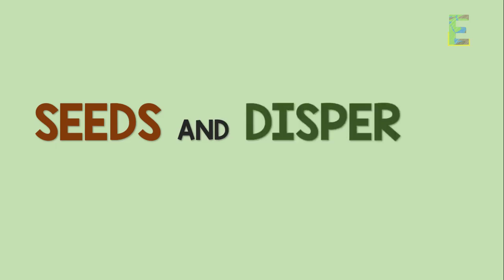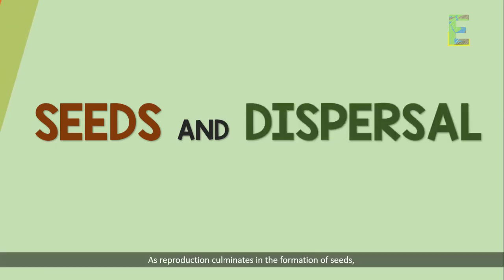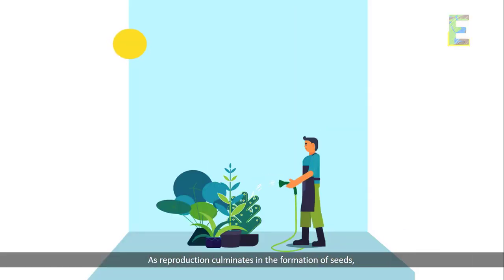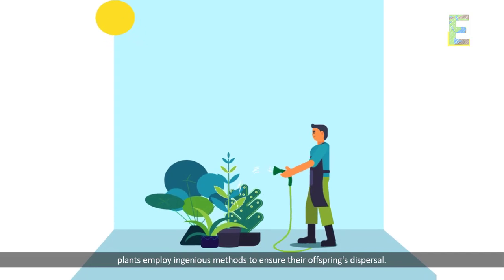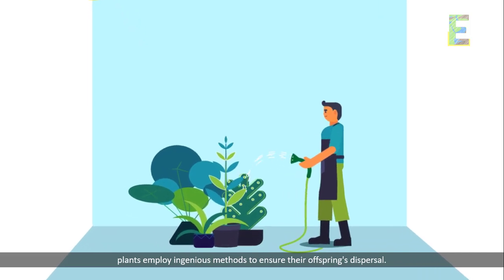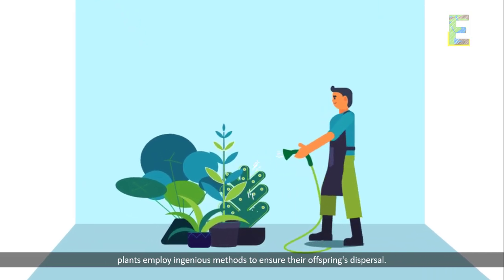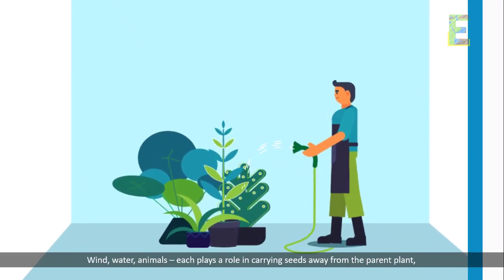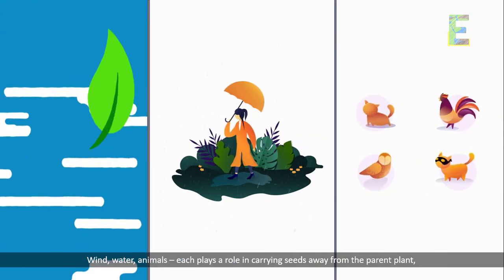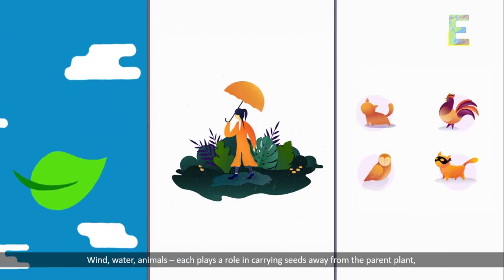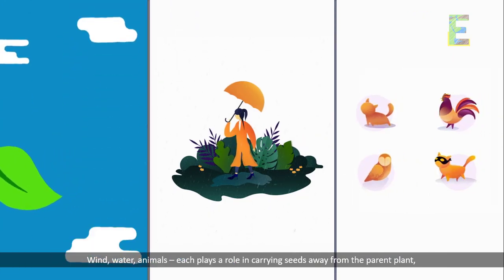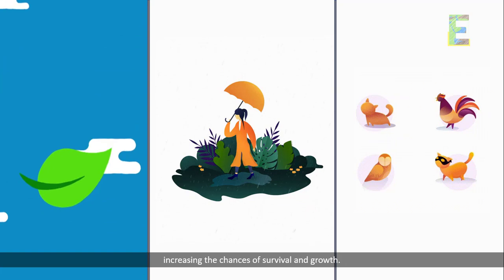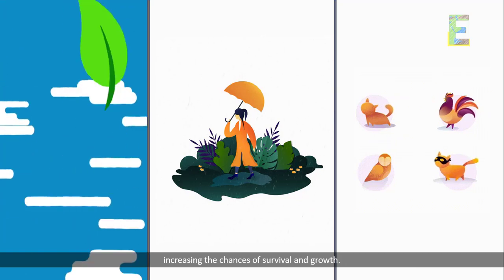Seeds and dispersal: as reproduction culminates in the formation of seeds, plants employ ingenious methods to ensure their offspring's dispersal. Wind, water, animals — each plays a role in carrying seeds away from the parent plant, increasing the chances of survival and growth.